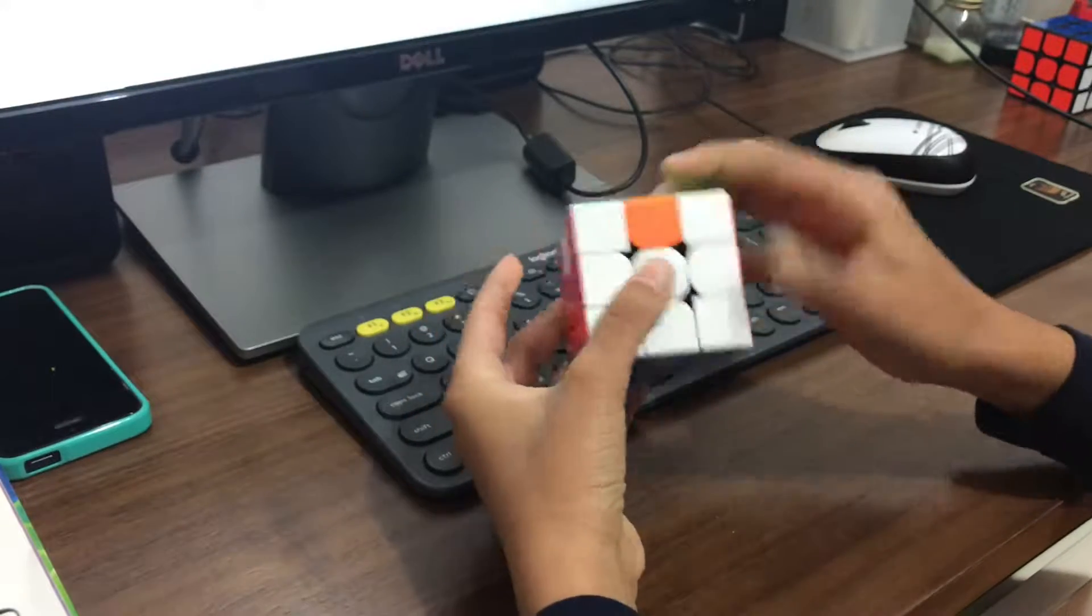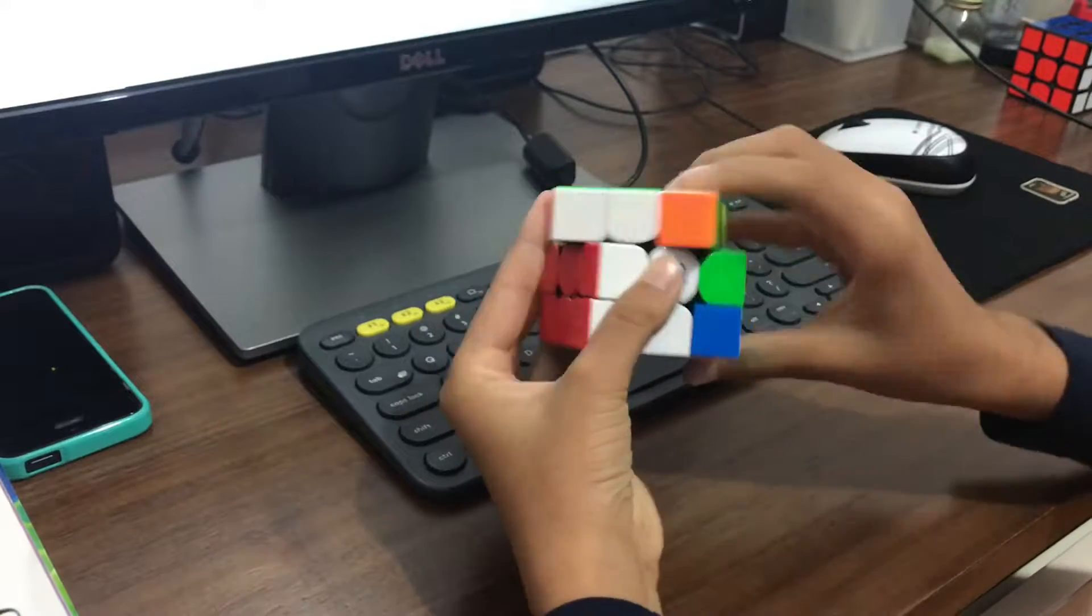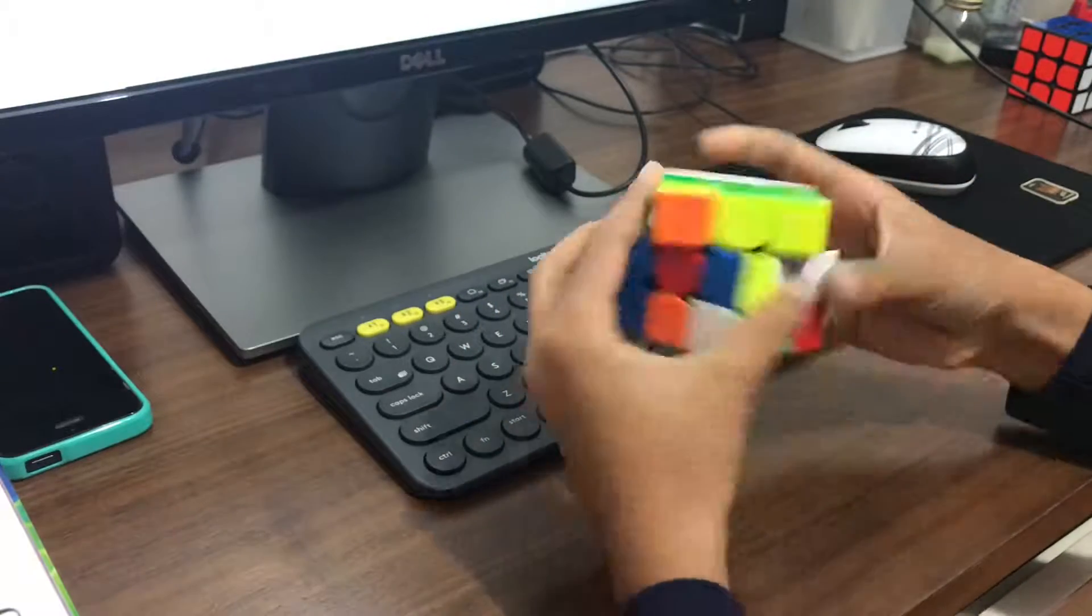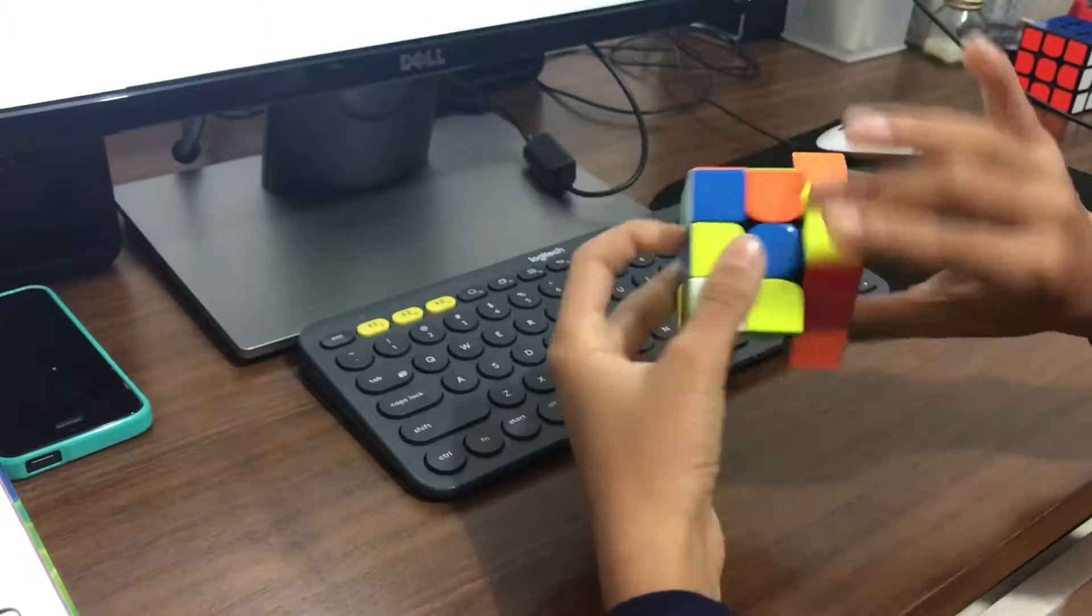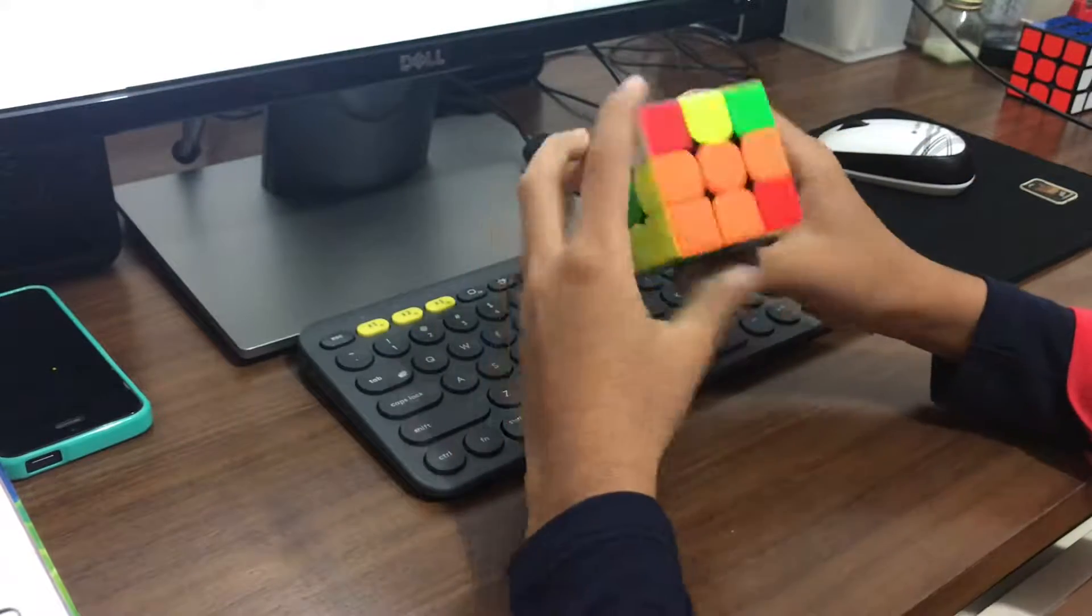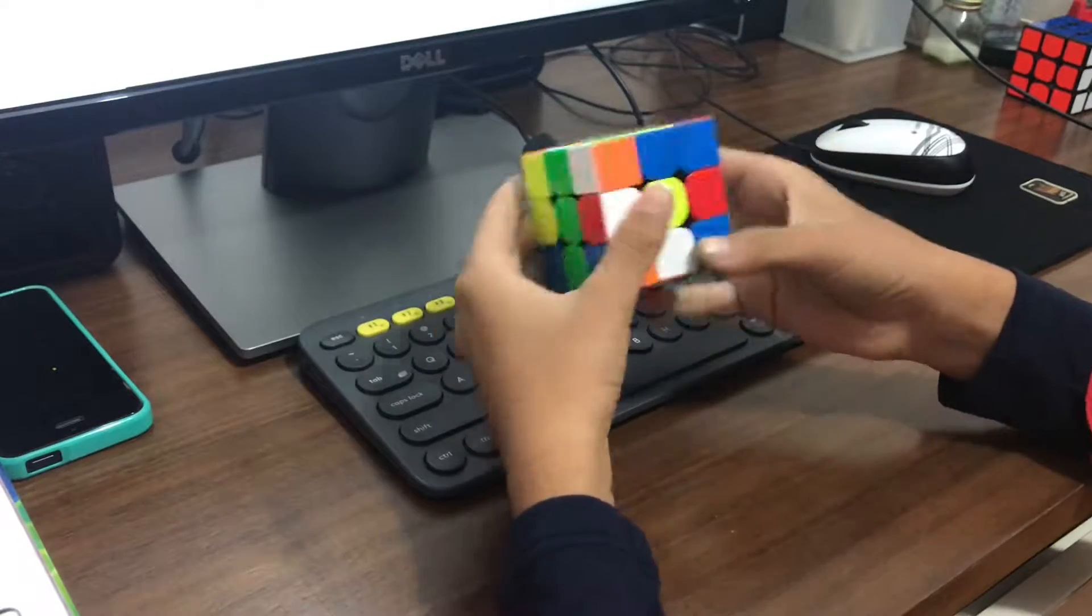As 3.47, there was a lot of luck involved in 3.47 and still it was a proper solve with a legitimate shuffle. Felix Zemdegs is now no longer the world record holder.